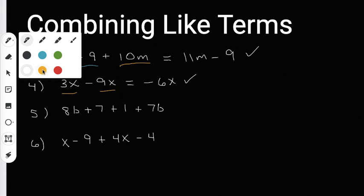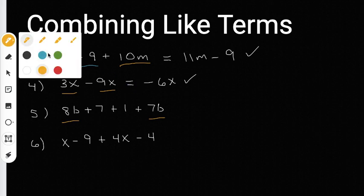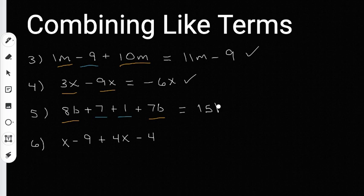Going down to number five, I'm going to switch my colors to yellow and underline the terms that end with a B. B is the variable. They have different numbers out in front — eight and seven — but that doesn't matter. They're still like terms because they both end with the same variable. Now I'm going to change my colors to blue and underline the two regular numbers that don't have a variable. So when I put the yellow terms together, I have eight B plus seven B, which gives me 15 B. And then seven plus one are my regular numbers, which combine to give me eight. So 15 B plus eight.